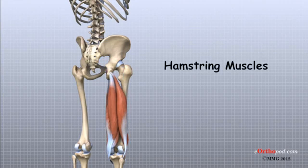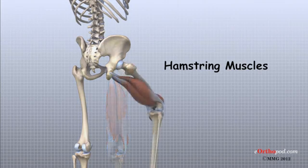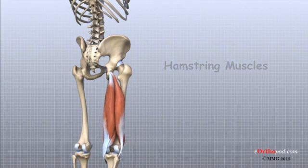Finally, the hamstring muscles run down the back of the thigh. These muscles originate at the bottom of the pelvis. Because the hamstring muscles cross the back of the hip joint on their way to the knee, they help to extend the hip, pulling it backwards.